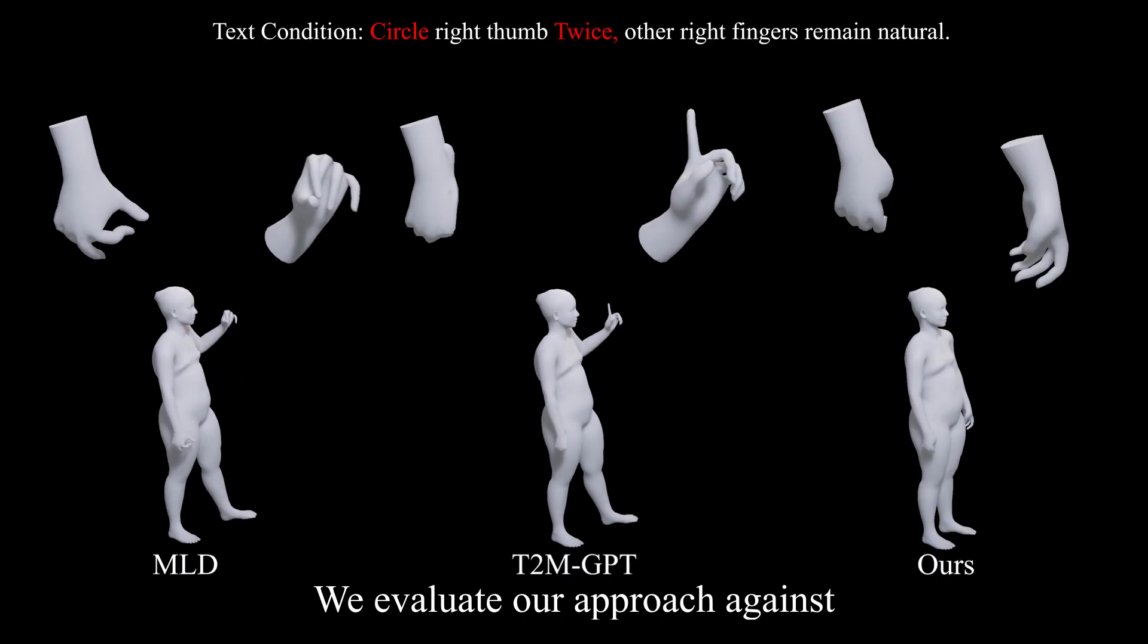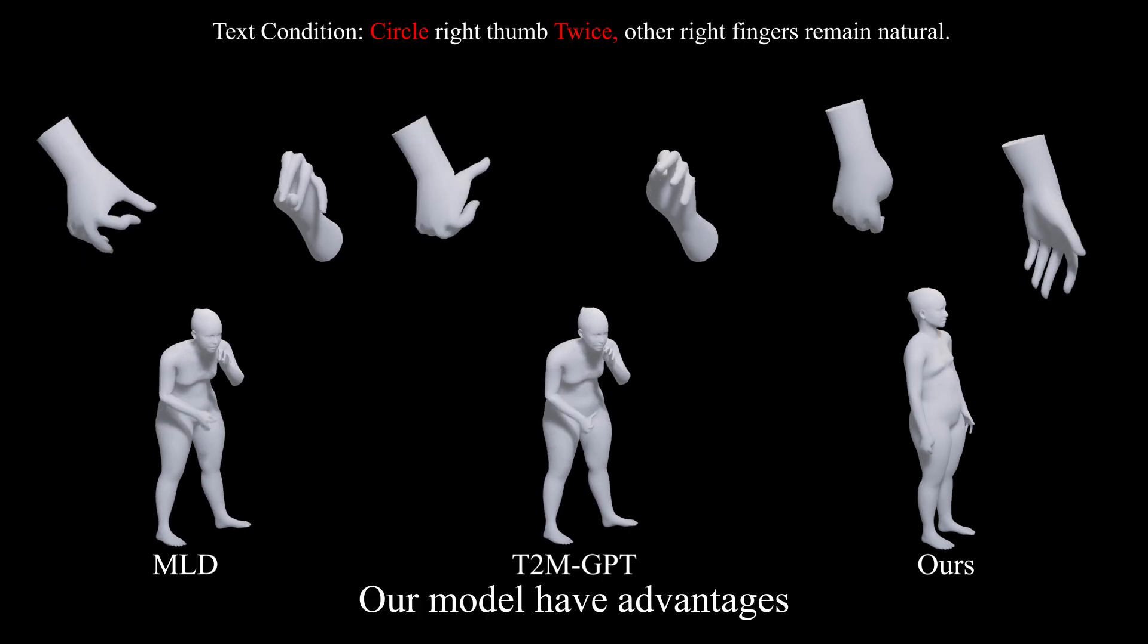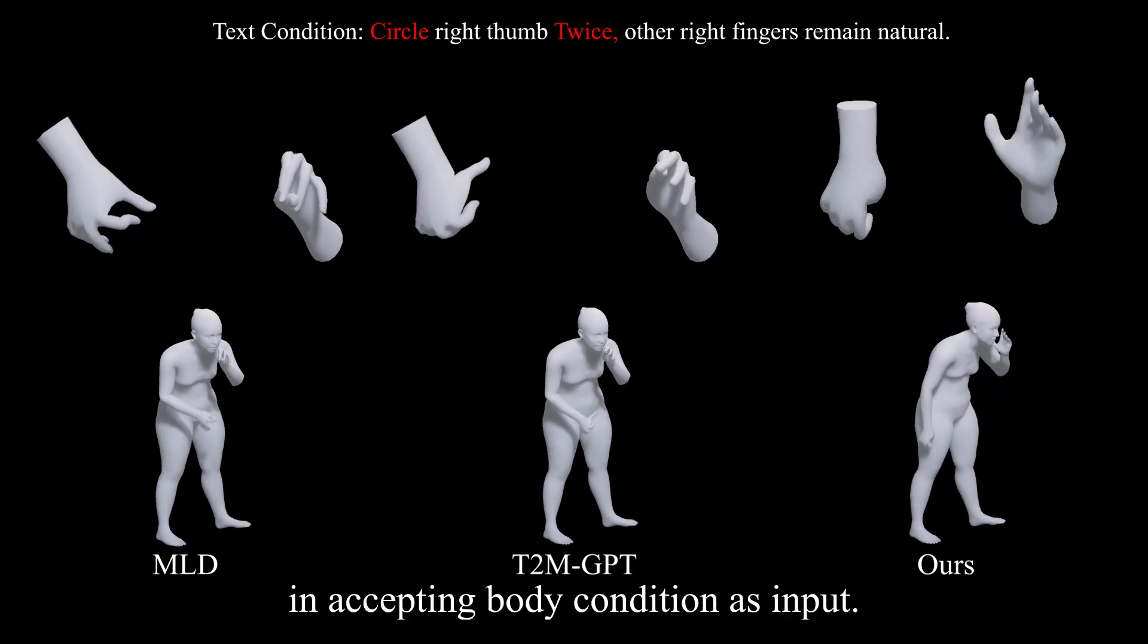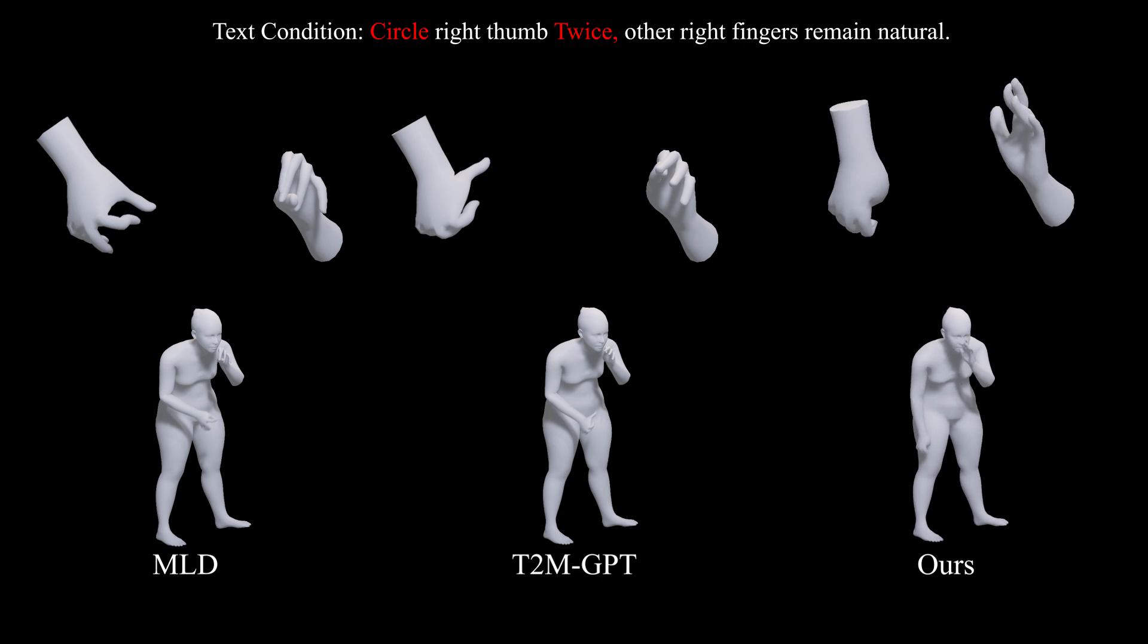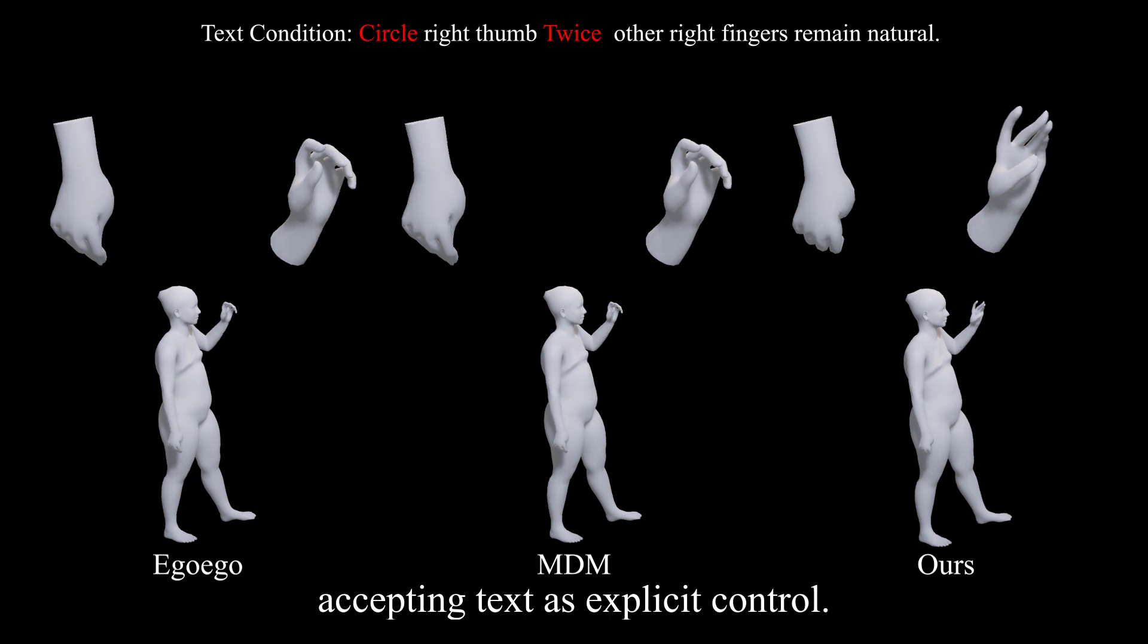We evaluate our approach against SOTA motion generation methods using our dataset. Our model has advantages in accepting body condition as input. BOTH Two Hands also performs better in accepting text as explicit control.